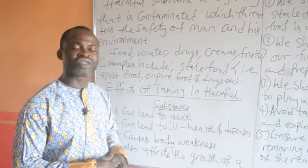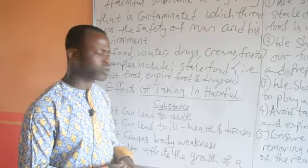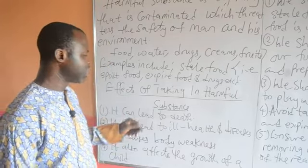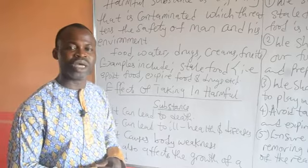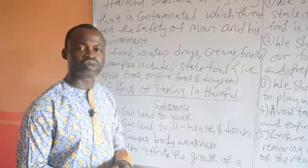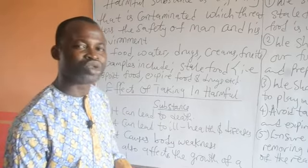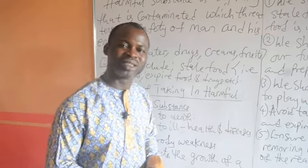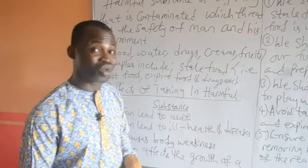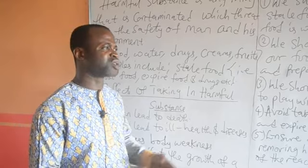What are those effects? Number one, it can lead to death. When unripe fruit is taken or unprescribed drugs are taken, it can lead to death. Number two, it can lead to ill health and diseases.